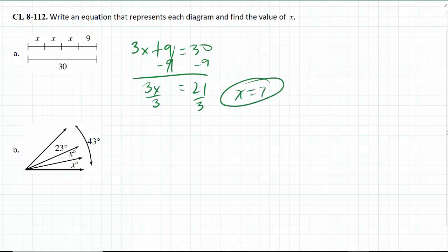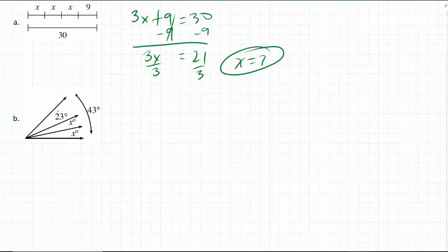Okay, for part b, this angle is a little different from the previous one, but instead of a special angle, they tell us right here that the angles are a combined 43 degrees, so that's going to equal the 23 degree angle and the 2x angles.